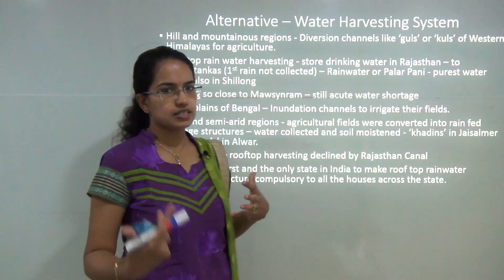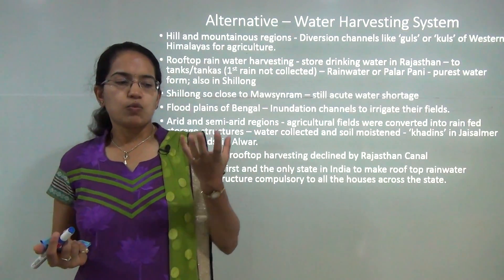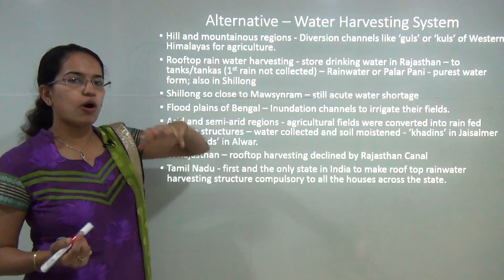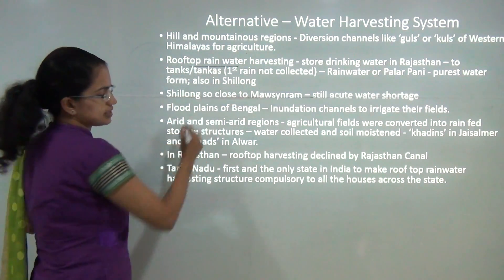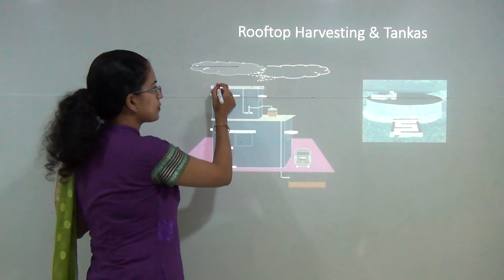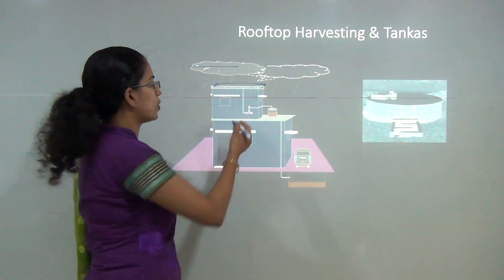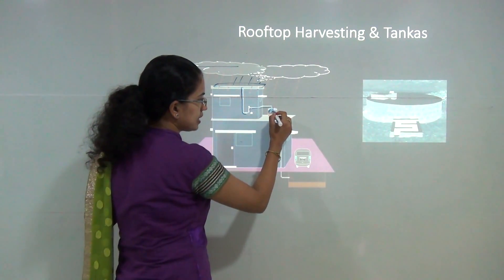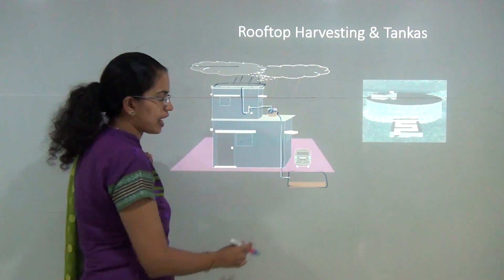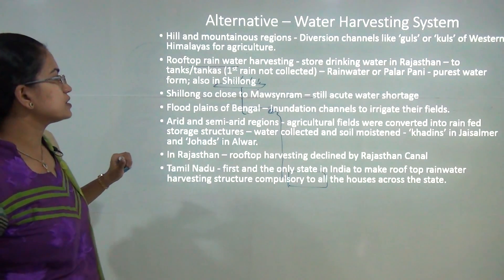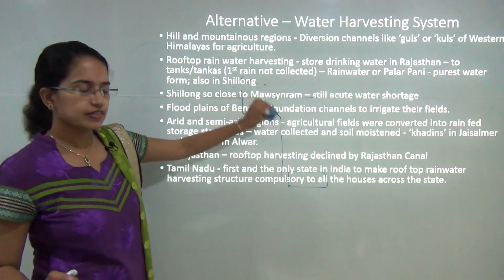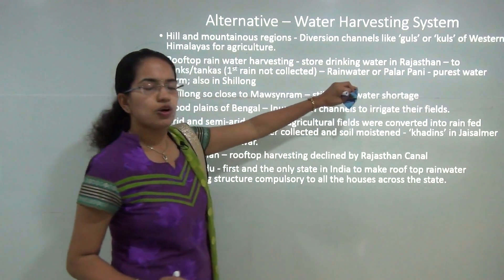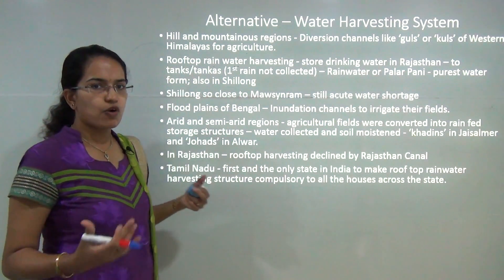What could be an alternative way of harvesting water? The best way is to preserve water naturally coming from rainfall. One common method is rooftop harvesting — you collect rainwater by leaving out the first rainfall and then collecting the remaining water on the rooftop. This water passes through a pipeline into a tank, and the extra water is supplied to an underground storage tank, called 'tankas' in common language. This is a commonly used water harvesting technique mainly in dry areas of Rajasthan. This rainwater is also called 'palar pani' — the purest form of water available.